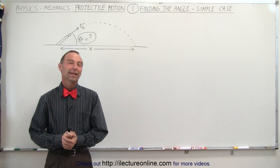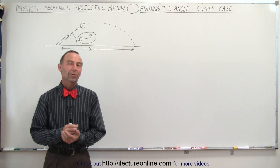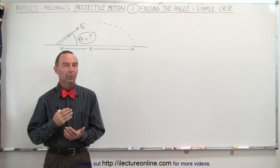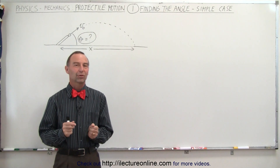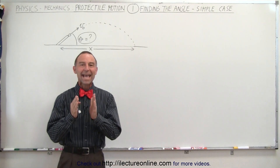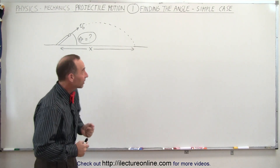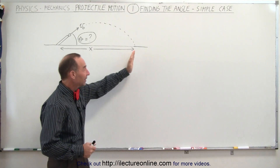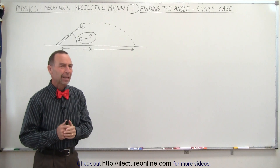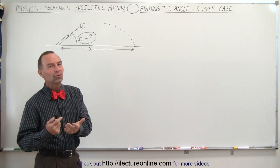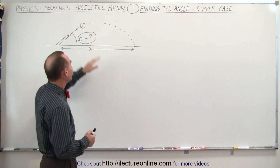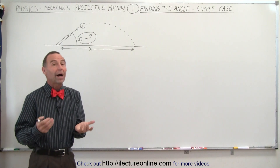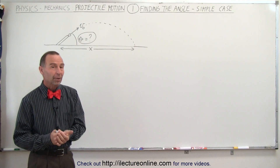Welcome to Electronline. One of the most difficult parts of doing projectile problems is the ones where they ask you what is the angle at which you need to fire a projectile such that it lands at a particular distance. They also usually give you the initial velocity. Now you'll see why that is a difficult problem.